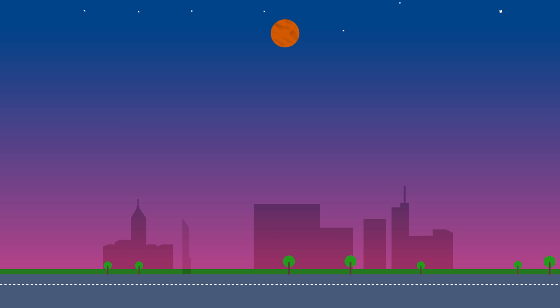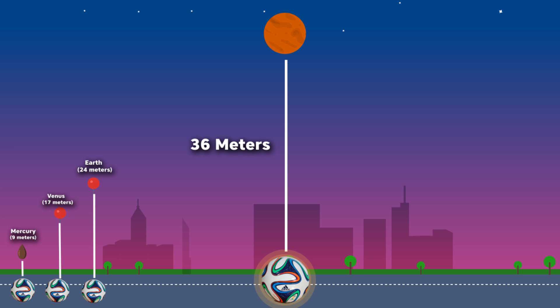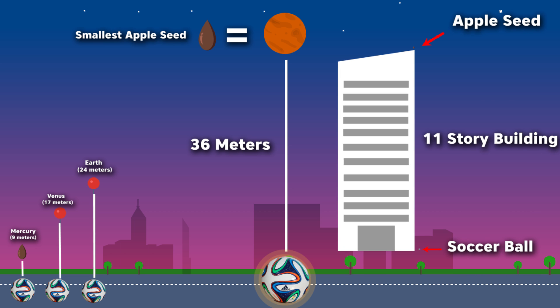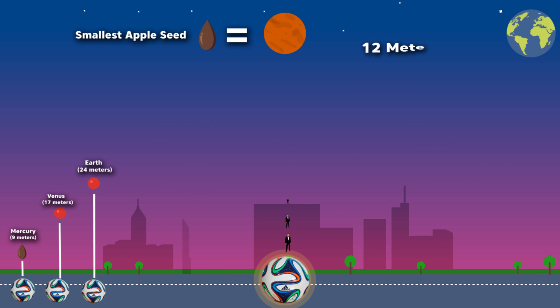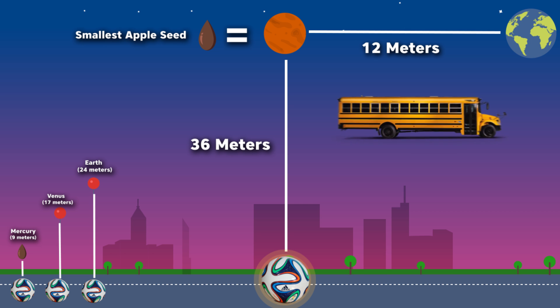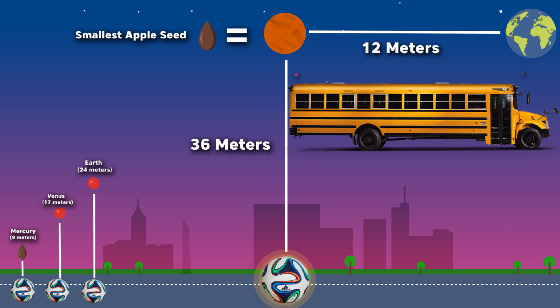Next up is Mars. Mars will be 36 meters away from our soccer ball sun with the scaled size of a smallest apple seed. If you want to imagine how far away Mars is from the sun, just take one little apple seed and put it on the roof of an 11-story building or 19 Elon Musks stacked one on top of another. The distance from Earth to Mars is 12 meters. Imagine the longest yellow school bus: on the farthest backseat there is a pinhead, and on the front window near the driver there is an almost invisible apple seed. That's basically Earth and Mars in real life.